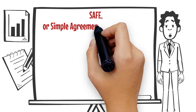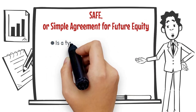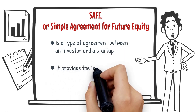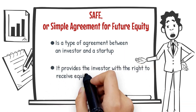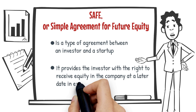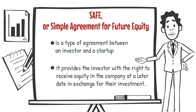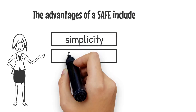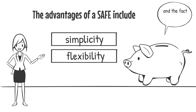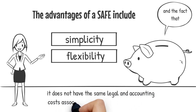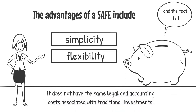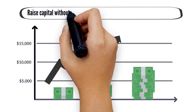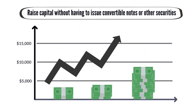SAFE, or Simple Agreement for Future Equity, is a type of agreement between an investor and a startup. It provides the investor with the right to receive equity in the company at a later date in exchange for their investment. The advantages of a SAFE include simplicity, flexibility, and the fact that it does not have the same legal and accounting costs associated with traditional investments. It also allows the startup to raise capital without having to issue convertible notes or other securities.